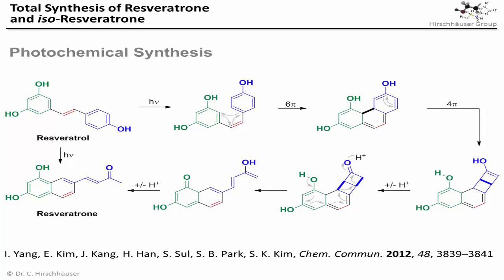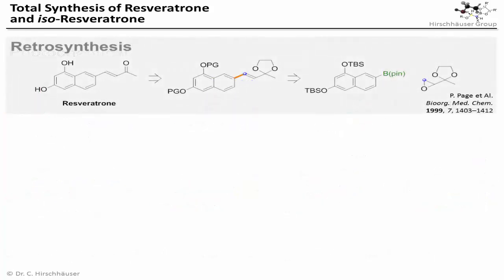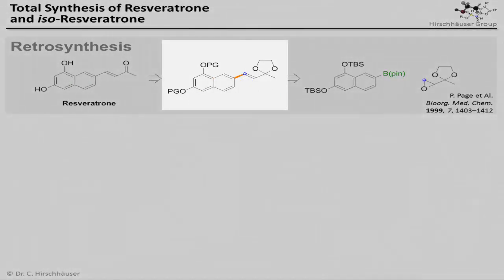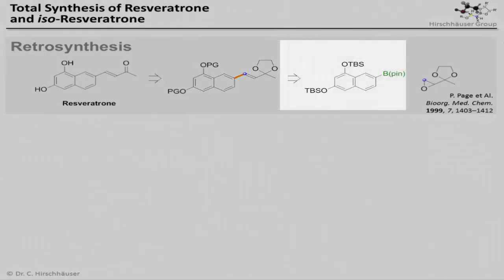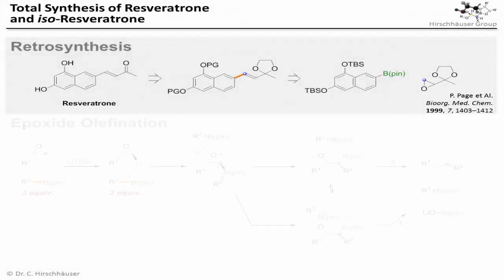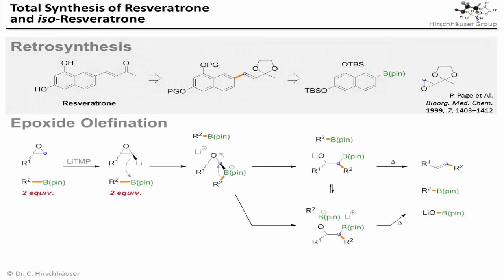So it is possible to make resveratron from cheaply available resveratrol this way. However, the synthesis is quite cumbersome and involves large solvent volumes and extensive purification. Therefore, developing a total synthesis for this molecule seemed quite attractive. For this we envisioned a globally protected intermediate, which could in turn be made from a naphthylboronic acid derivative and a known epoxide precursor, by using our epoxide olefination reaction.